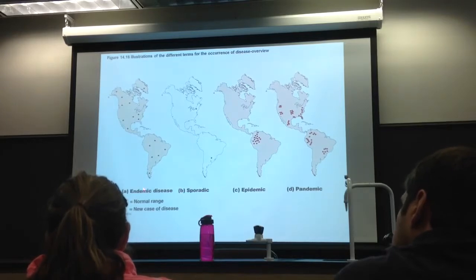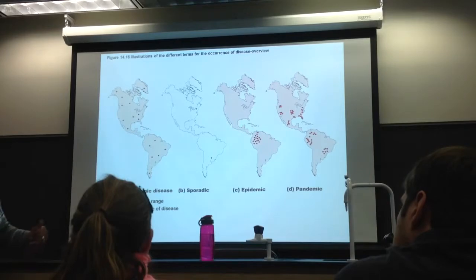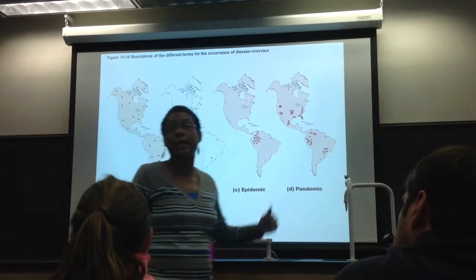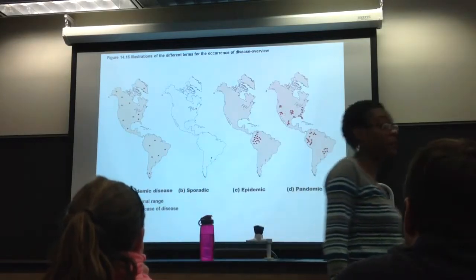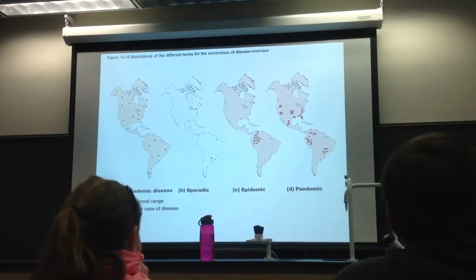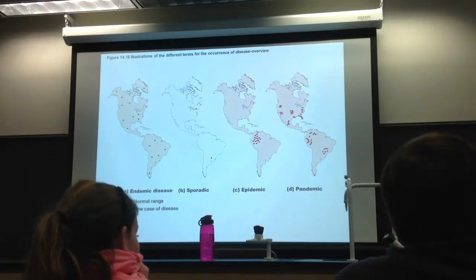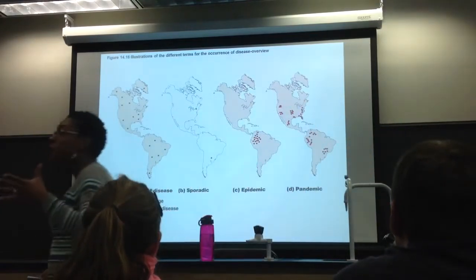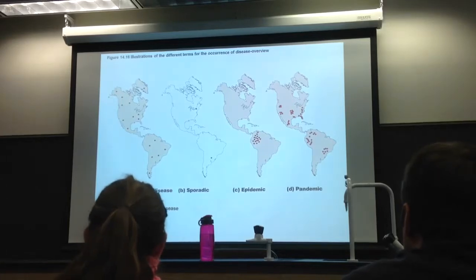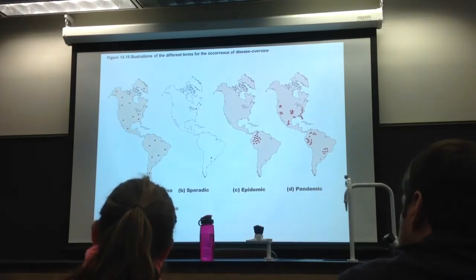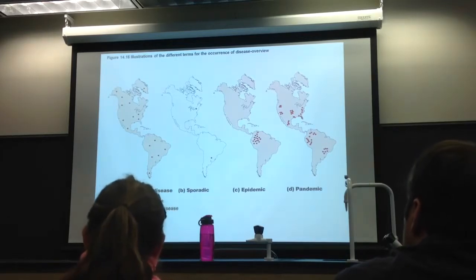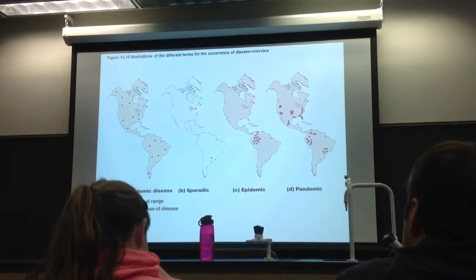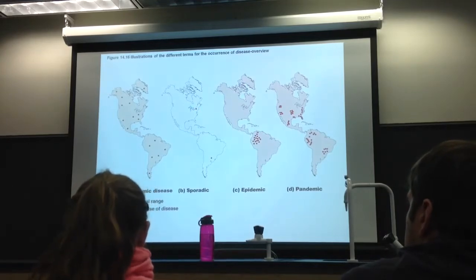An example of an endemic disease: malaria is endemic in some African countries like Cameroon. If you go there, you can get malaria — it's always there in low numbers. Sporadic is different — there's no widespread presence, just a few isolated cases here and there. Hantavirus in the U.S. is sporadic: spread by mice and fleas, with a few cases in certain areas.